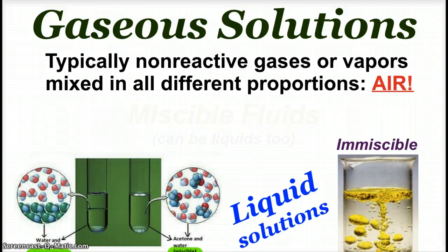With gaseous solutions, we need to be talking about non-reactive gases or vapors, because if you mix reactive gases you'll have a chemical reaction, not a mixture. Air is our most common example of a gaseous solution. The solvent in air is the gas in the largest amount, which is nitrogen. All the other gases — oxygen, carbon dioxide, noble gases, etc. — are the solutes.